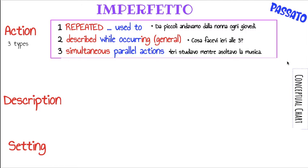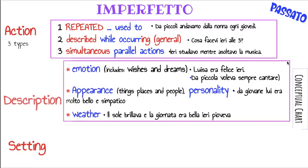Cosa facevi ieri alle tre? Or simultaneous parallel actions: Ieri studiavo mentre ascoltavo la musica. Or if you're making descriptions in the past for an emotion, for example: Luisa era felice ieri. You can't really pinpoint that. Or appearance, personality — for things and places, what they looked like, maybe a nice scenery in the past, somebody's personality. And also the weather, when you're describing it in general.